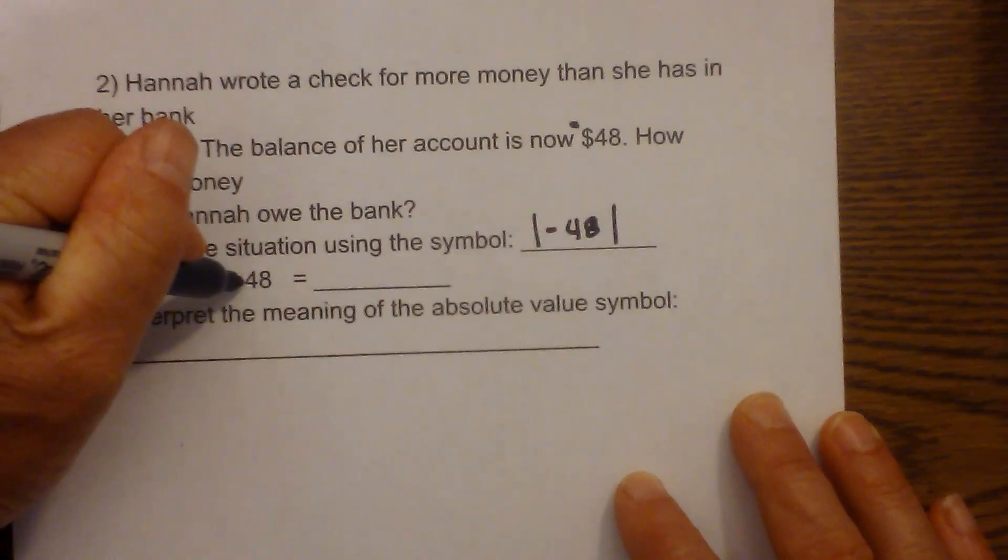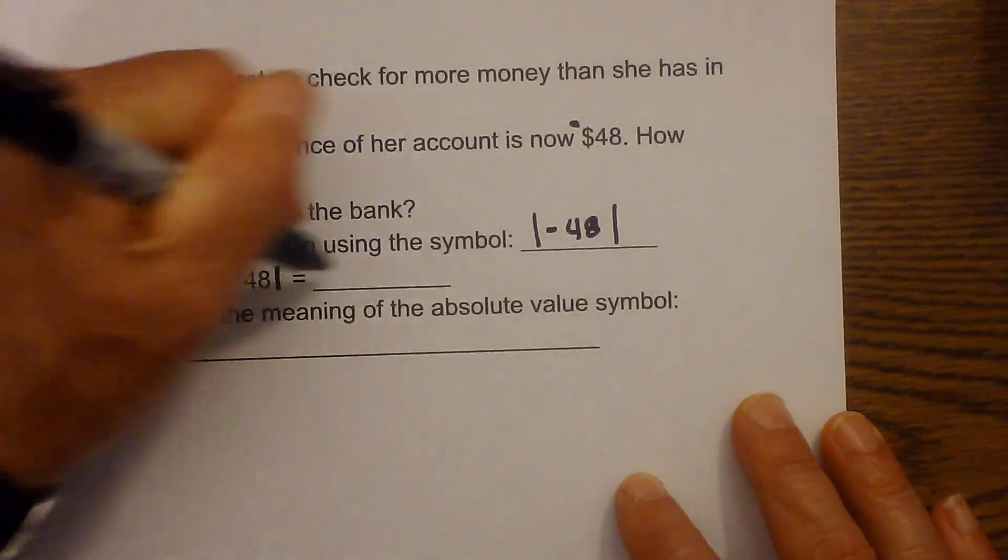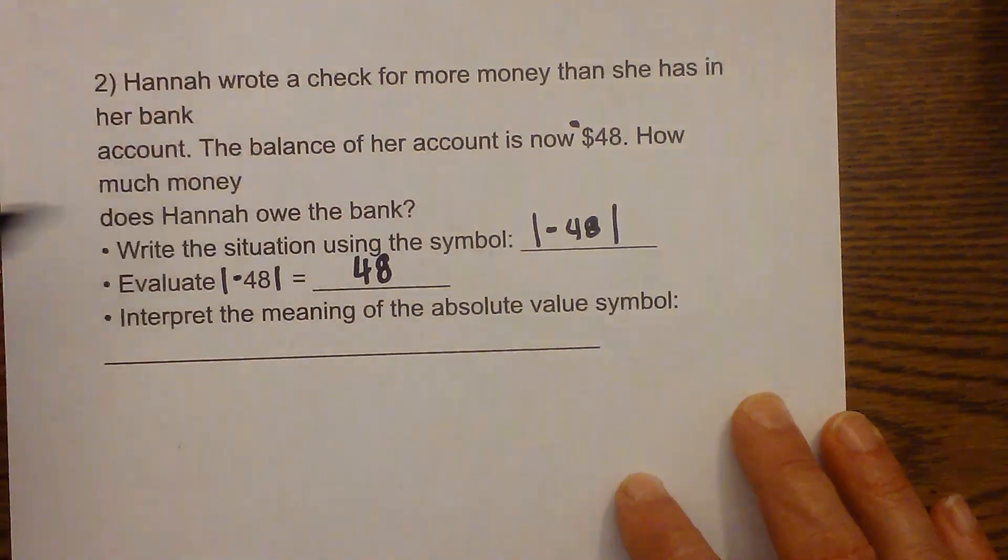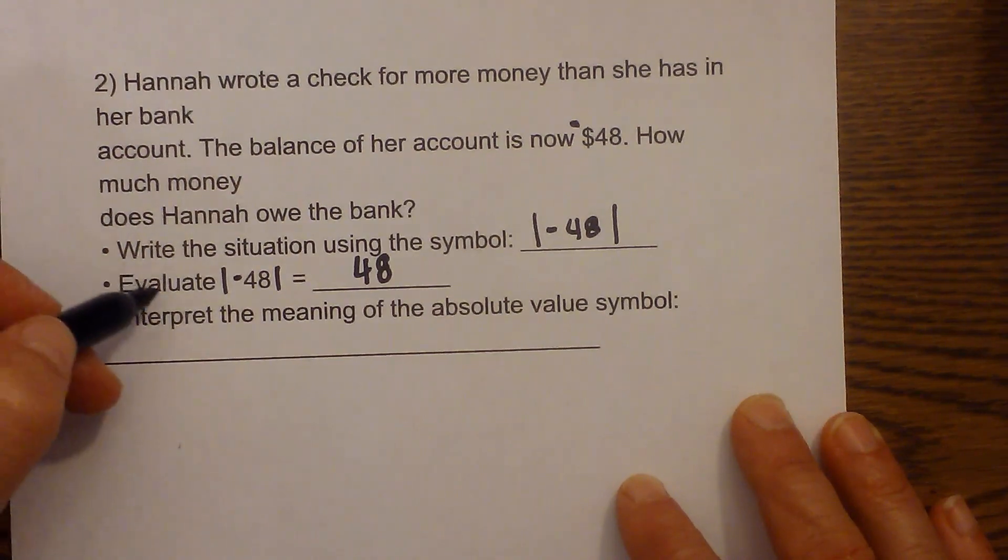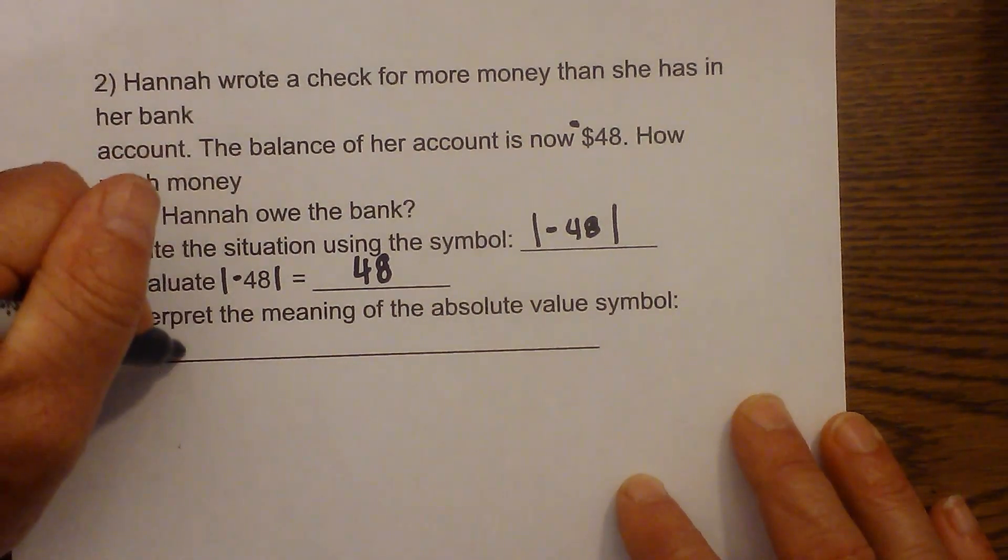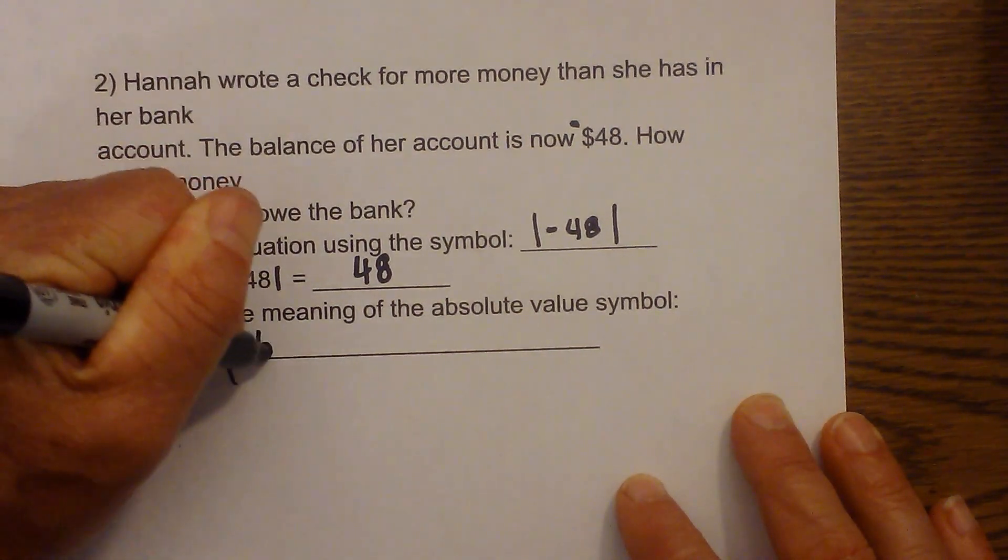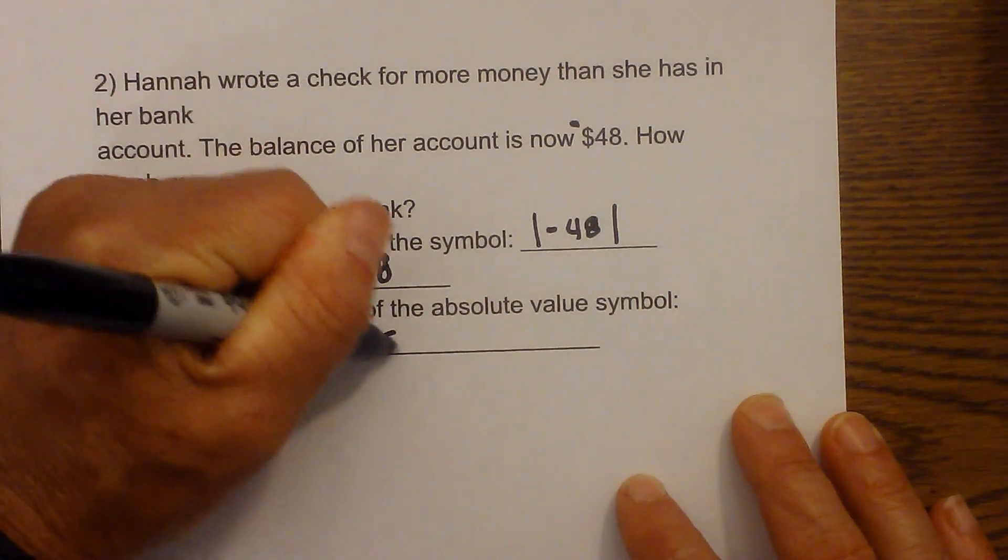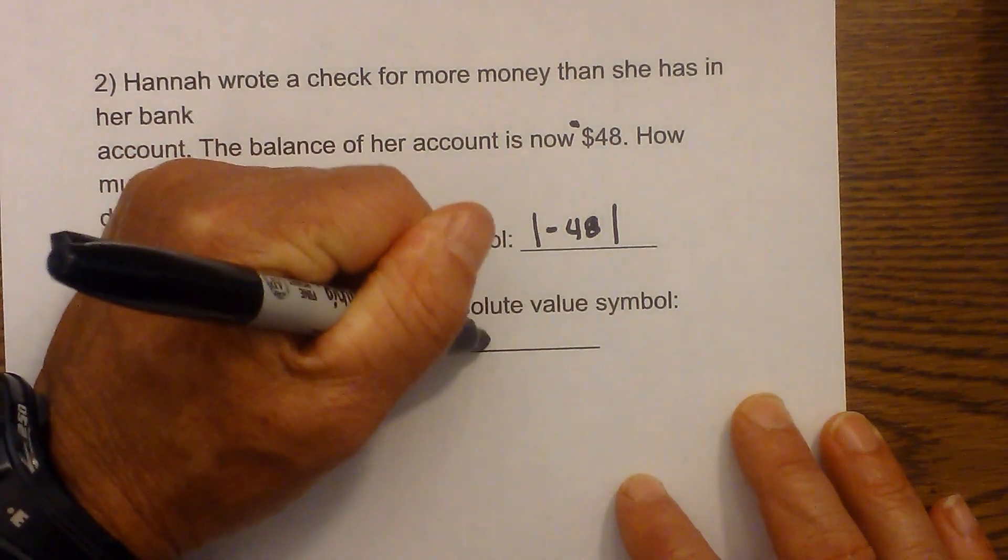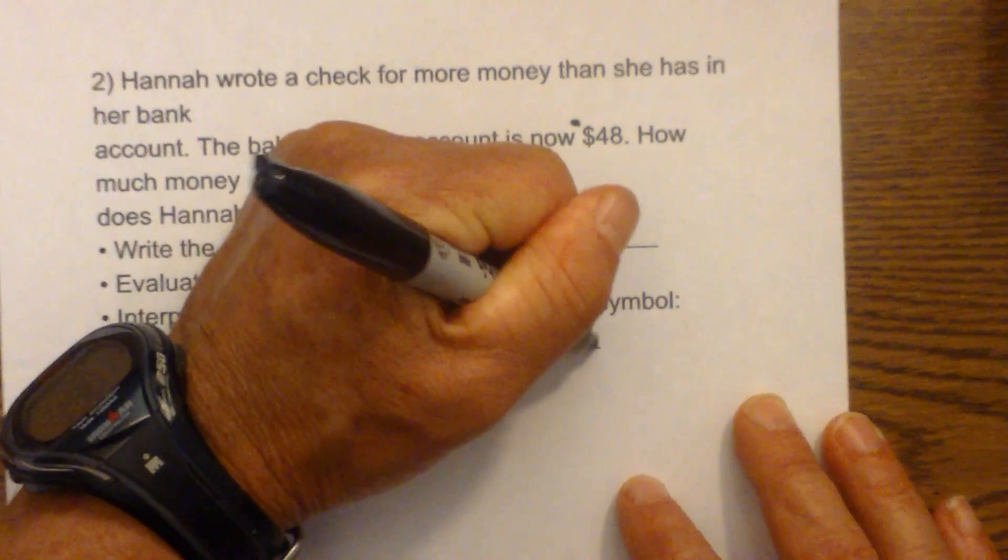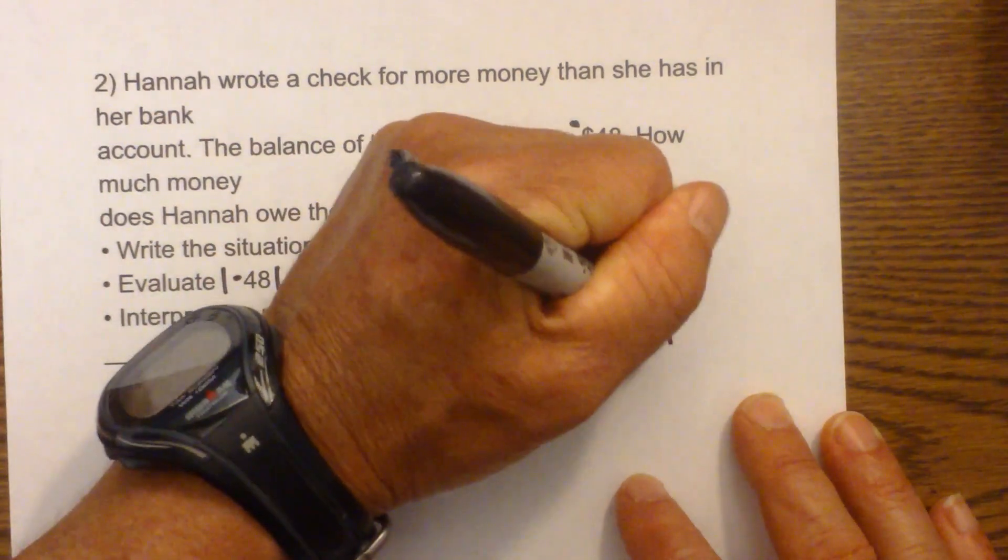And then if you evaluate—sorry, this didn't print—it would be 48. And then what this means is that she needs to—she's $48 from 0. So she would have to pay back $48 to get her account even to 0.